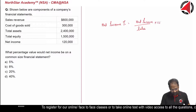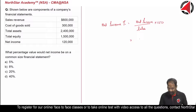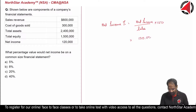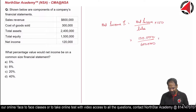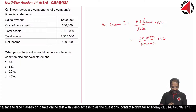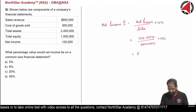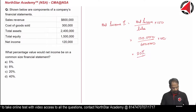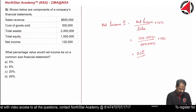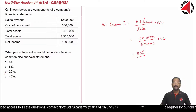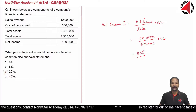Net income is $120,000 and sales revenue is $600,000. To get the answer in percentage: 120,000 divided by 600,000 equals 20%. So the correct option is option C — net income percentage is 20% of sales revenue.